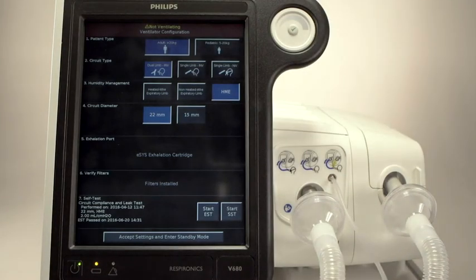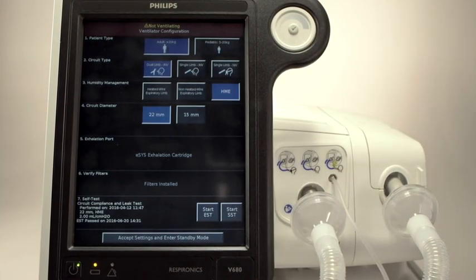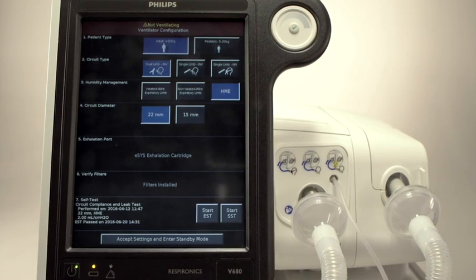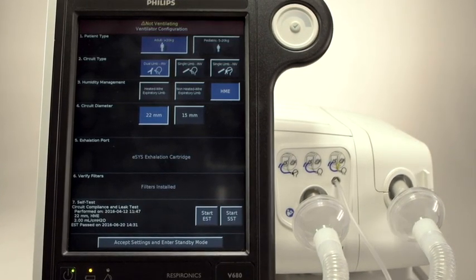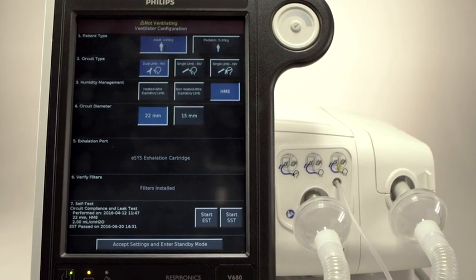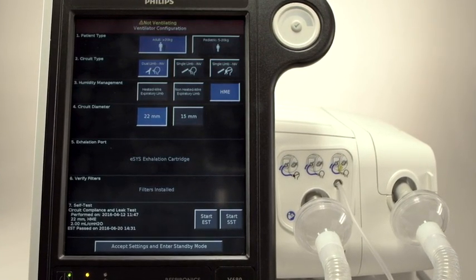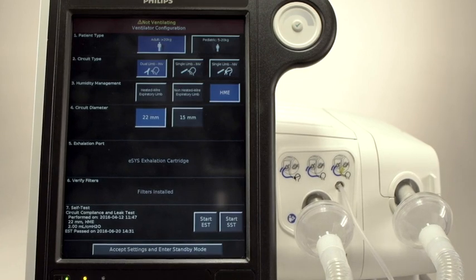Both tests should be run before placing the ventilator on a new patient. The short version tests for leaks and measures circuit compliance. It also tests the function of a remote alarm if connected. The long version will calibrate the O2 sensor and test various hardware, safety systems, and alarms.